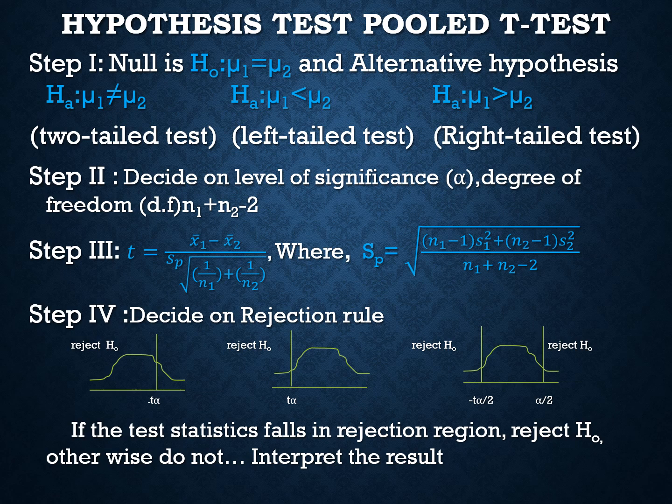In step 3 we compute the test statistic using the t-test formula. The term SP — marked in red — is the pooled standard deviation. We find the standard deviation of each sample separately, square those standard deviations, and then substitute them into the SP formula to get the pooled standard deviation.